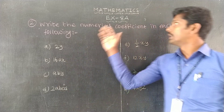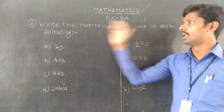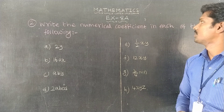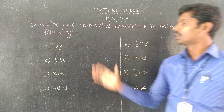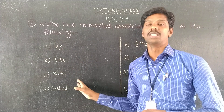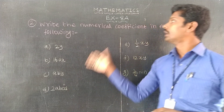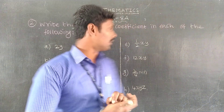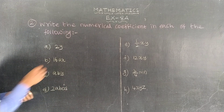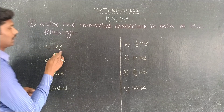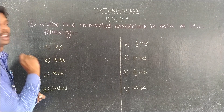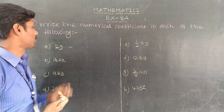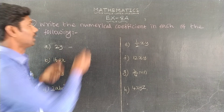Dear students, exercise 8a is question number 2. The numerical coefficient is part of the algebraic terms. All the terms are algebraic terms. We can write the numerical coefficient — the numerical coefficient is the number part of the term.